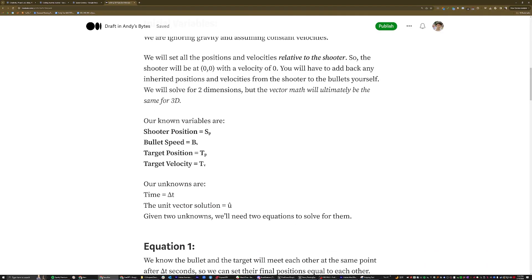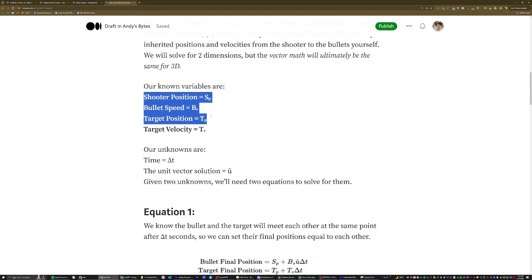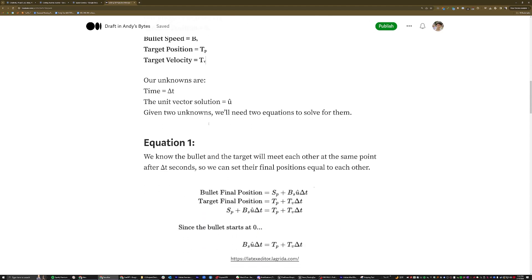The variables that you're going to have at the beginning are the shooter's position, the bullet's speed, target position, and the target velocity. The unknowns are going to be time and the thing that we ultimately want to know which direction to shoot the bullet in.